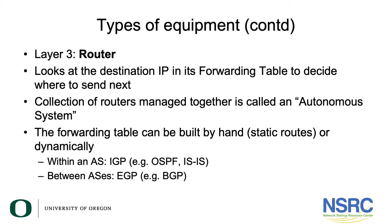Within an autonomous system, between your own routers, you would use what's called an IGP — an interior gateway protocol. The most common examples are OSPF and ISIS. Between two different autonomous systems, you would use an exterior gateway protocol, and the only one really in use these days is BGP, the border gateway protocol. So we've now looked at layers one, two, and three.